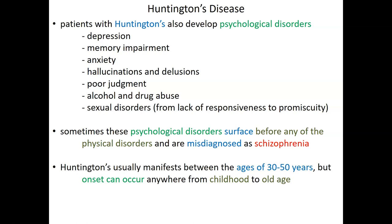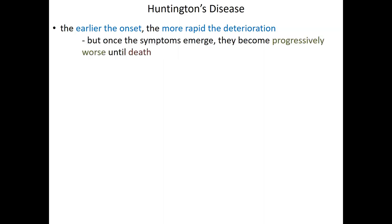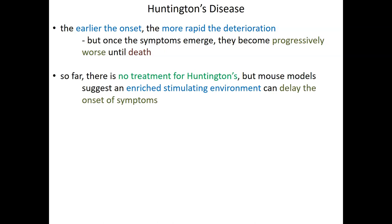Huntington's usually has symptom onset between the ages of 30 and 50, but there's a very wide range — from childhood all the way into the elderly years. The earlier the onset, the more rapid the deterioration. Regardless of when symptoms first emerge, they ultimately get progressively worse and most individuals will die from the neurological damage. So far there's no treatment, but mouse models show evidence that enriching and overstimulating the environment can slow the progression to some extent.